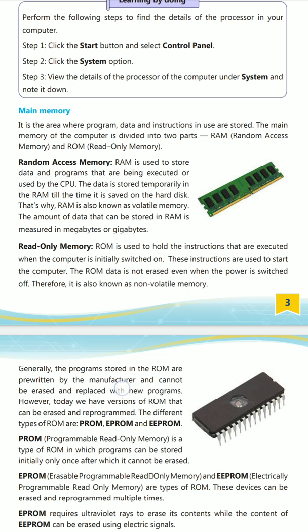Nowadays you can purchase RAM up to 32 GB depending on your budget. RAM is volatile memory — when the computer starts, RAM is in continuous use. If you are using different types of applications, such as music or other applications simultaneously, RAM allocates memory to each of them.